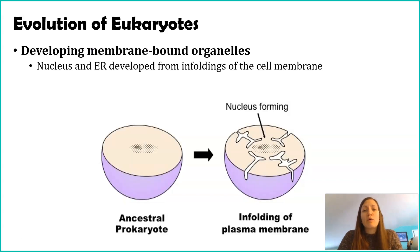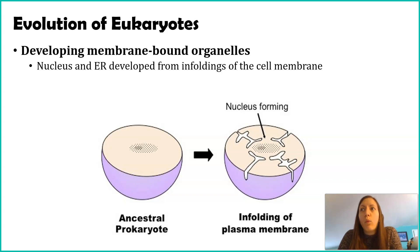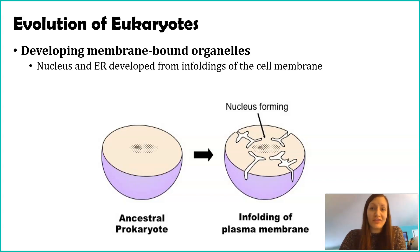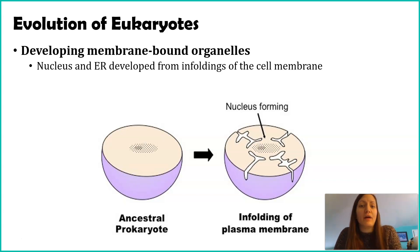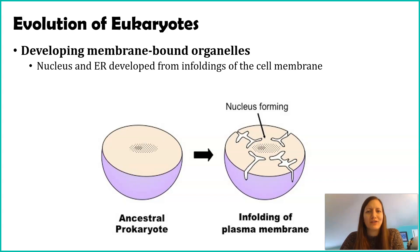Something to consider is why was this selected for? If it was a mutation or random happenstance, why did it continue? Why did we see further development of this versus just the death of those prokaryotes? That might have been a downside to them. So what upside existed in order to have these organisms survive? We're going to explore that more in class, but start pondering that now.